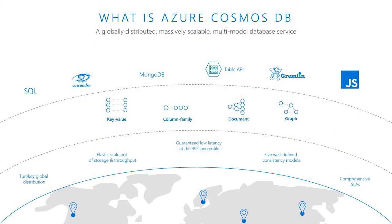It independently and elastically scales both storage and throughput across all regions, ensuring your app is always on, even during unpredictable traffic bursts. It also has some unique features, including multi-master support, and offers developers a choice of multiple consistency models, multiple models and APIs, so developers can use the model that fits their app's requirements and use the tools and frameworks that developers are familiar with.